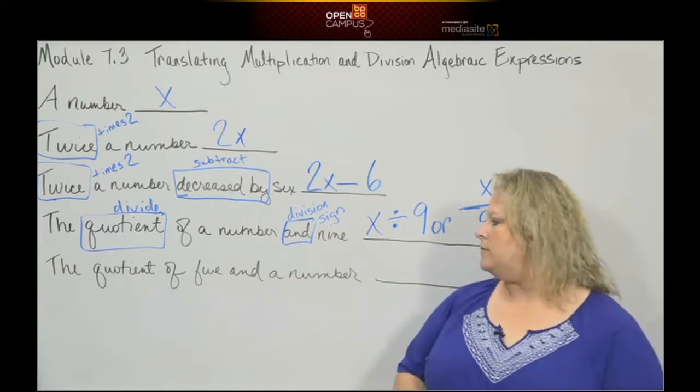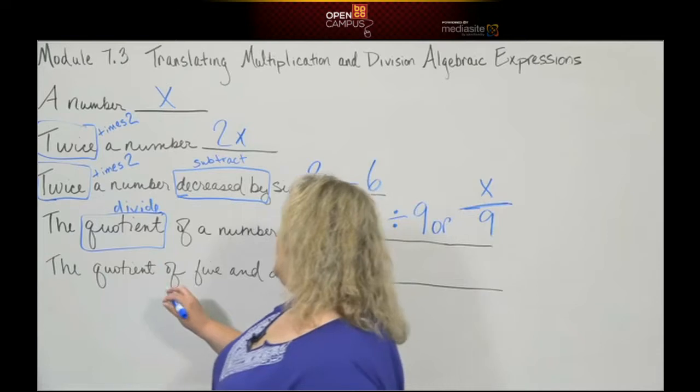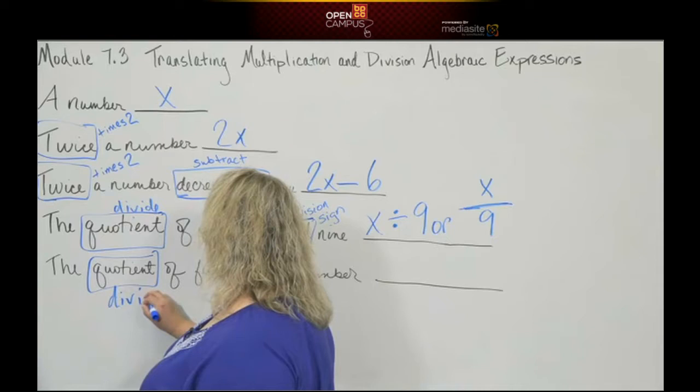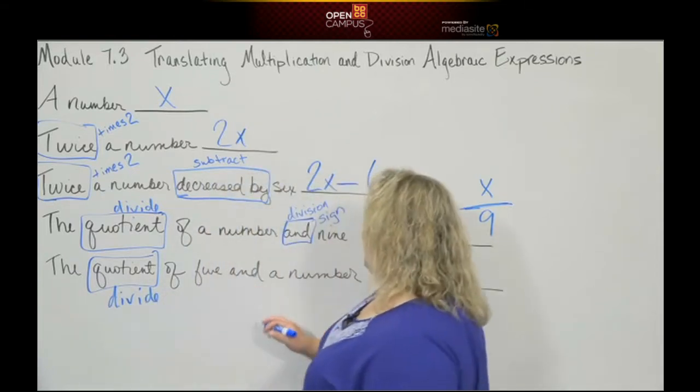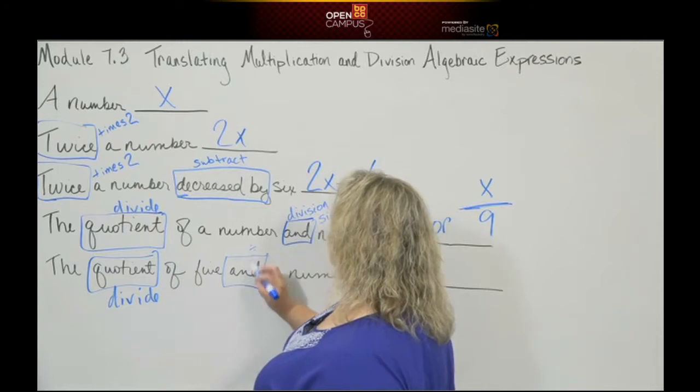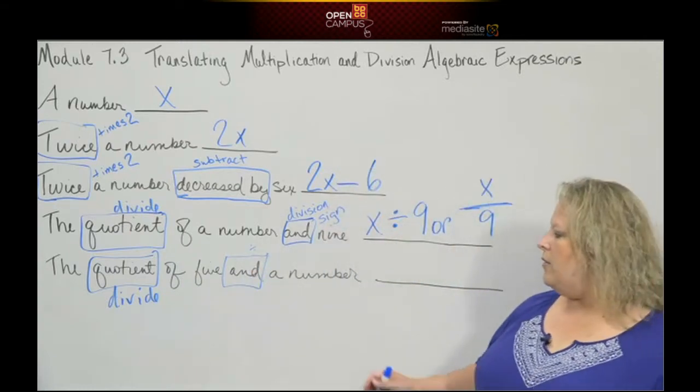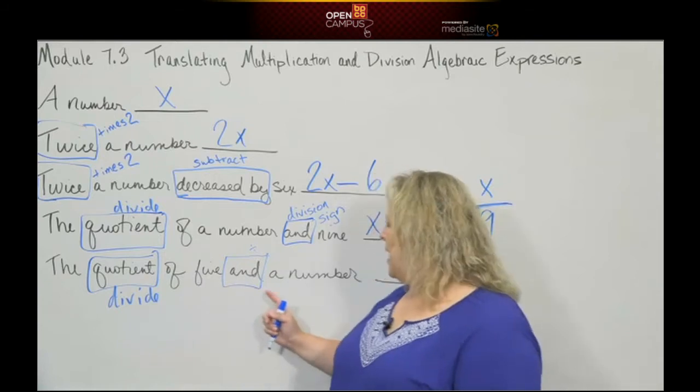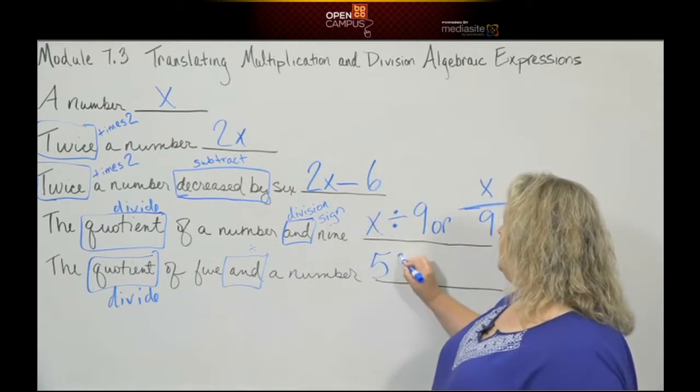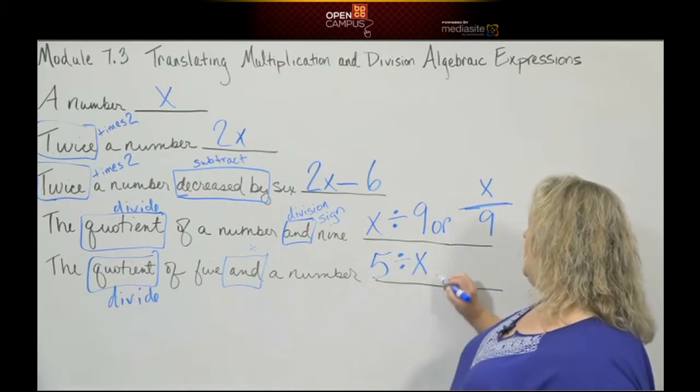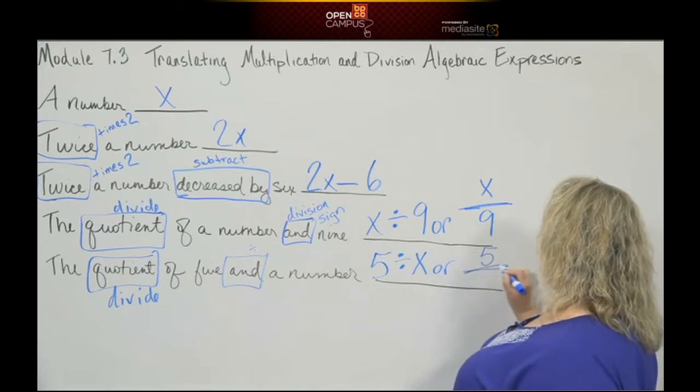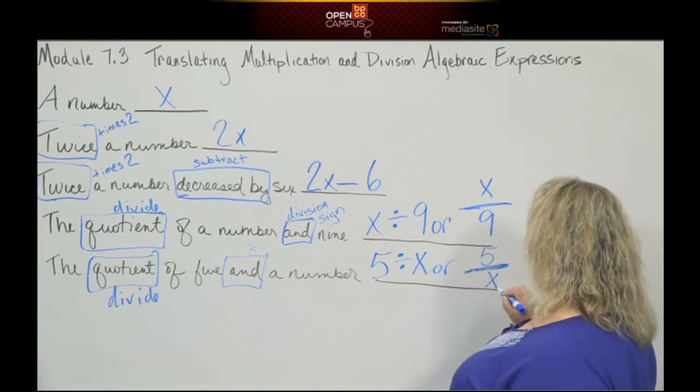The last one: quotient of 5 and a number. Quotient means divide, and that's where our division sign or fraction bar goes. This time I have 5 divided by a number, so I'm either going to write 5 division sign x, or 5 in the numerator divided by x in the denominator.